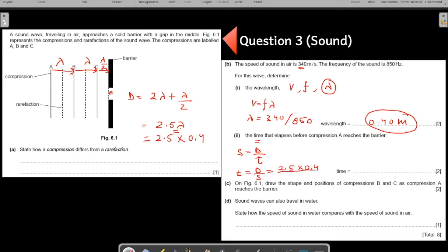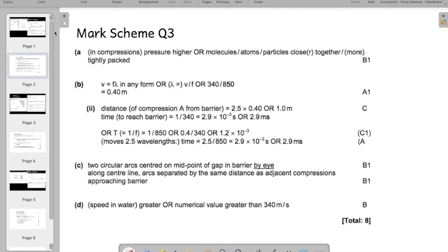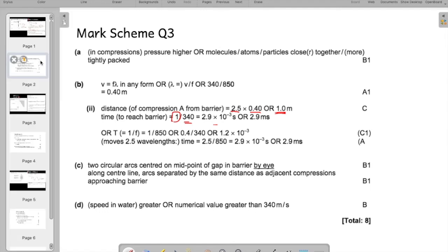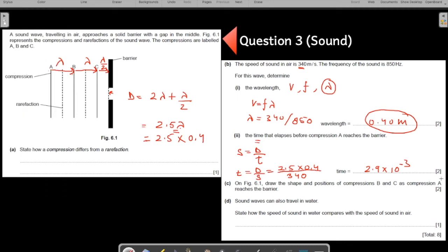Now you will have to take out your calculators, do some calculation on your calculator and write down the value of the time. Let us see if we are doing everything correct. Yes. 2.5 times lambda gives you your distance. And distance over speed is your time. So it is 2.9 times 10 to the power minus 3. Make sure that you do the calculation and write down your answers. This should be your answer.